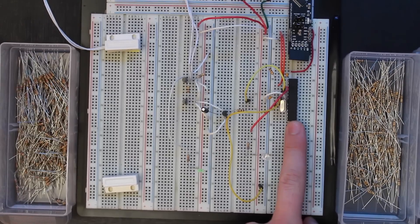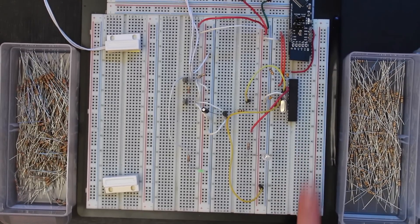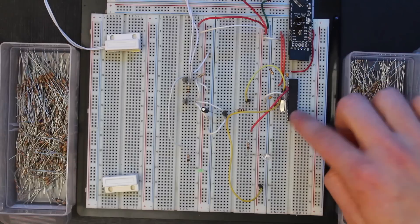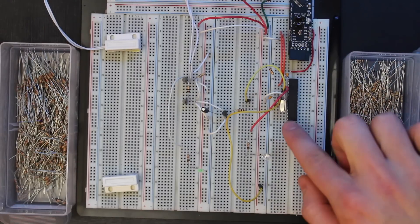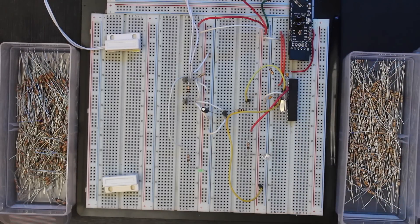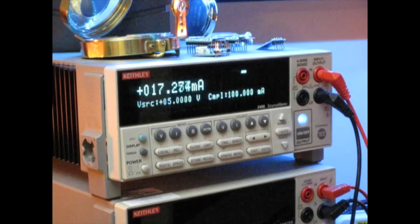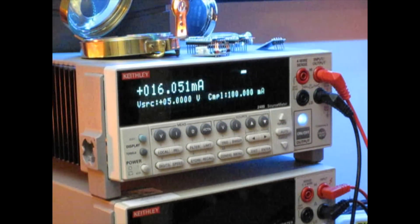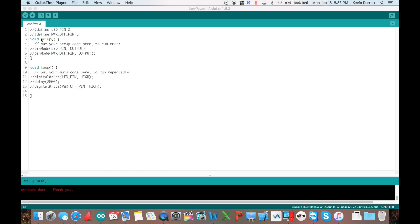This is the ATmega328P-PU, running at 16 megahertz with 5 volts applied. We have a blank sketch loaded into it—everything commented out—so it's just void setup blank, void loop blank. The bone stock Arduino sketch. In fact, we're going to remove